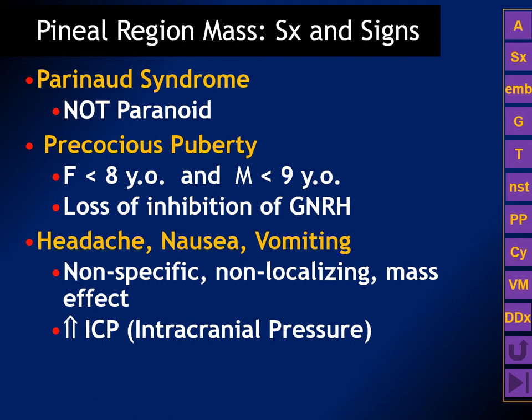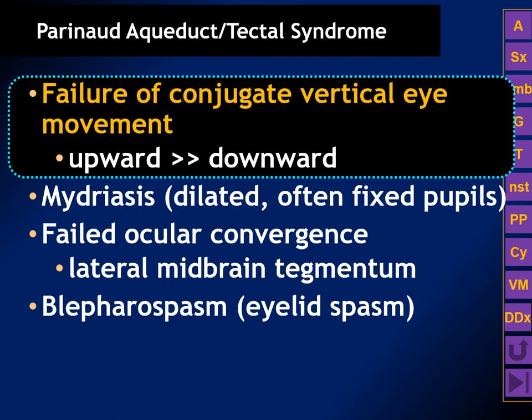Because the pineal gland produces a hormone, it has no blood-brain barrier — just like the pituitary gland. So the normal pineal gland will enhance on MR and CT. The intensity of enhancement is directly related to the molecular weight of the gadolinium used on MR. Enhancement on CT may be masked if the pineal gland is calcified on the non-contrast scan. The most common sign and symptom of pineal region masses is Parinaud syndrome — a failure of conjugate vertical gaze, usually beginning with a problem looking up. Patients may also have precocious puberty, dilated fixed pupils, failed ocular convergence, and eyelid spasm.